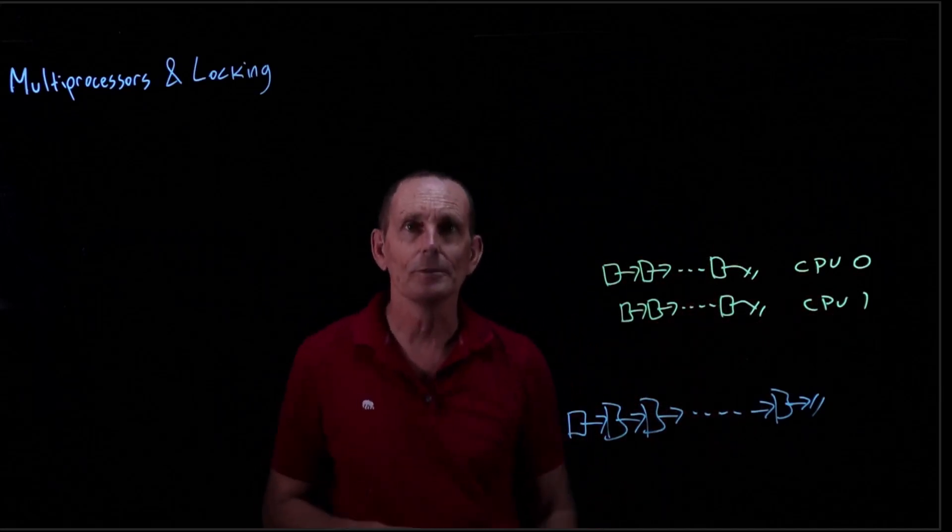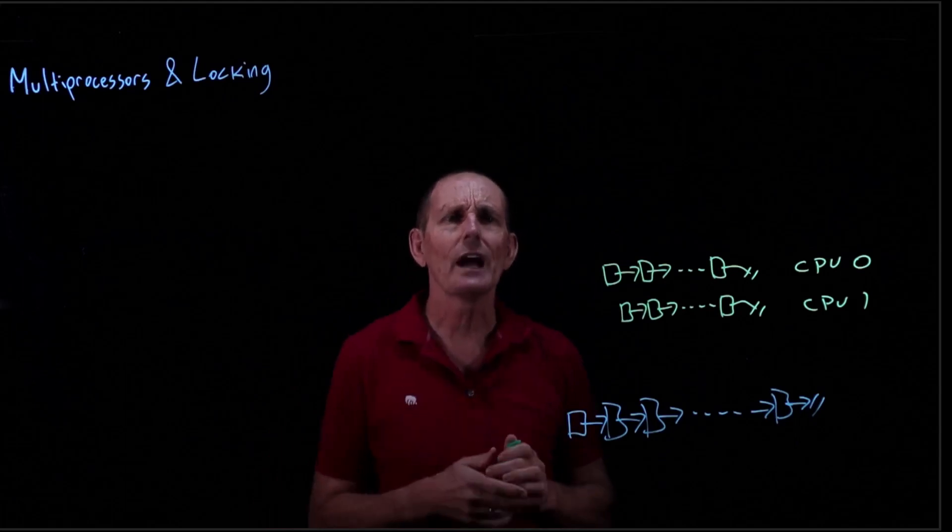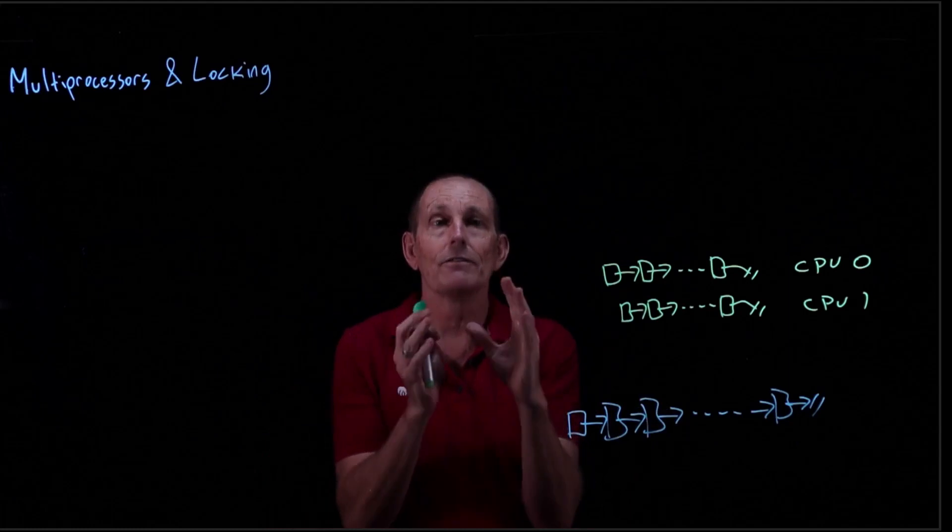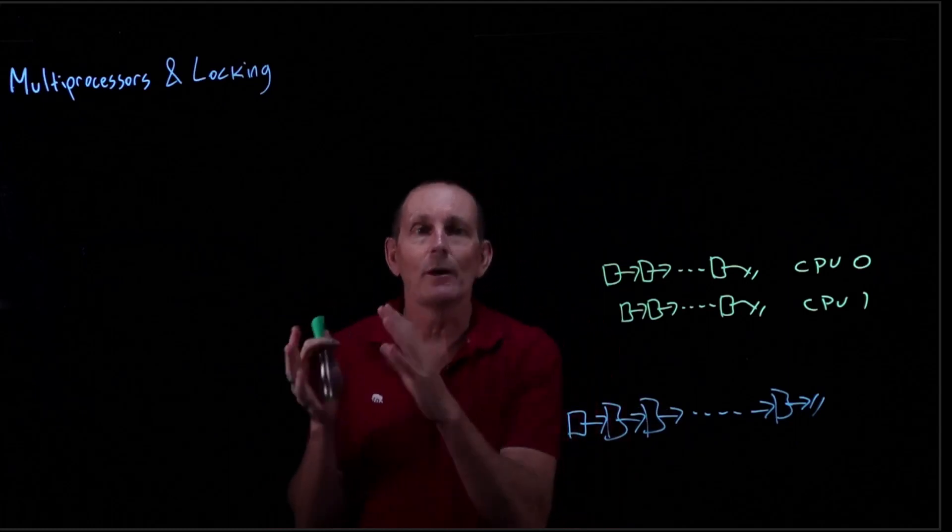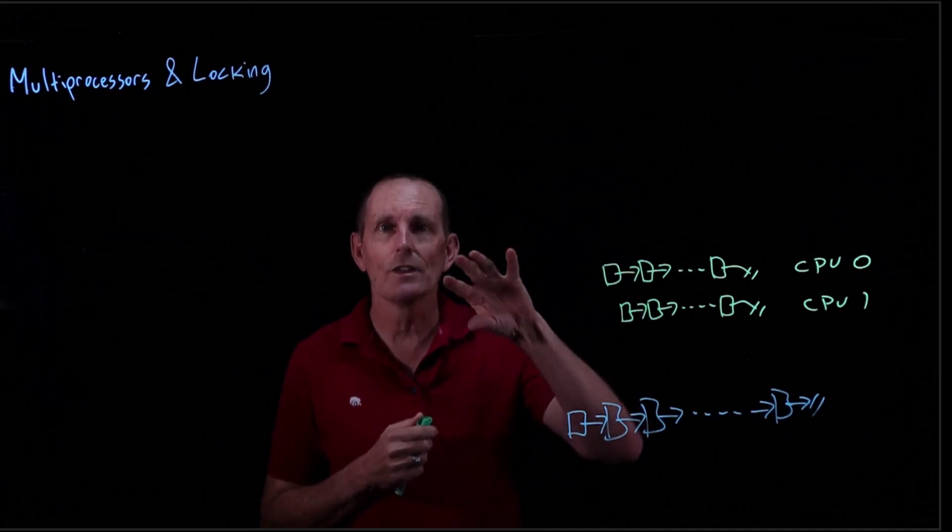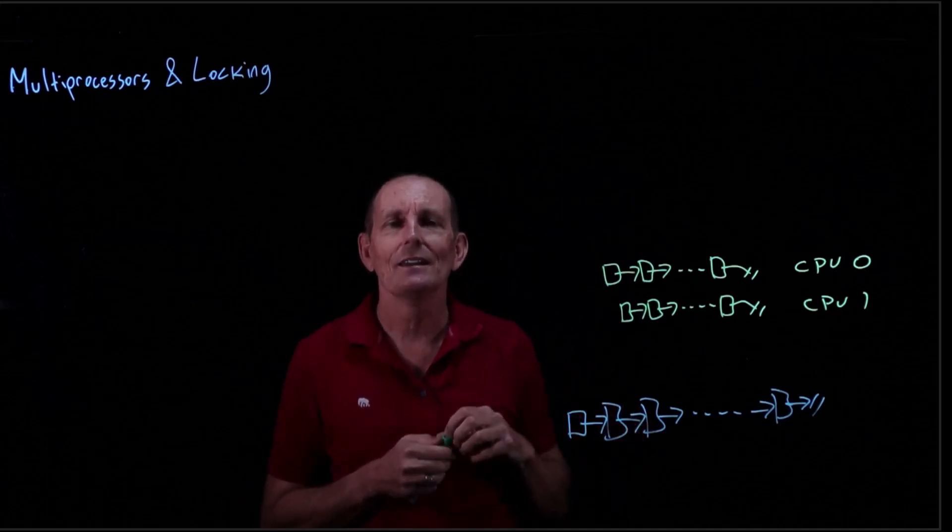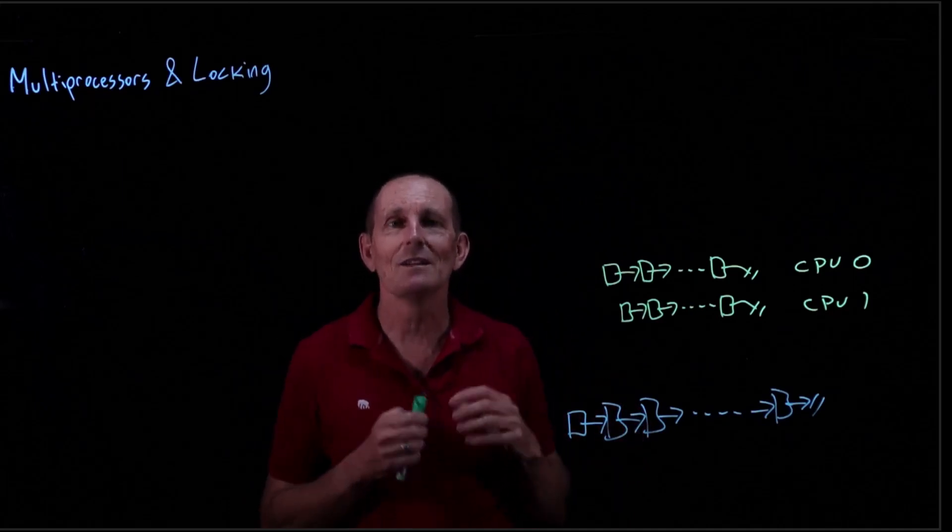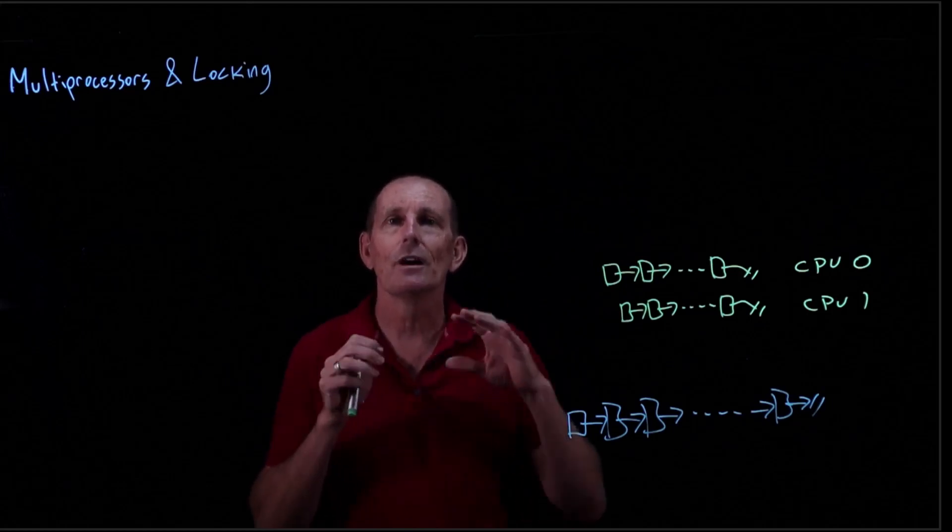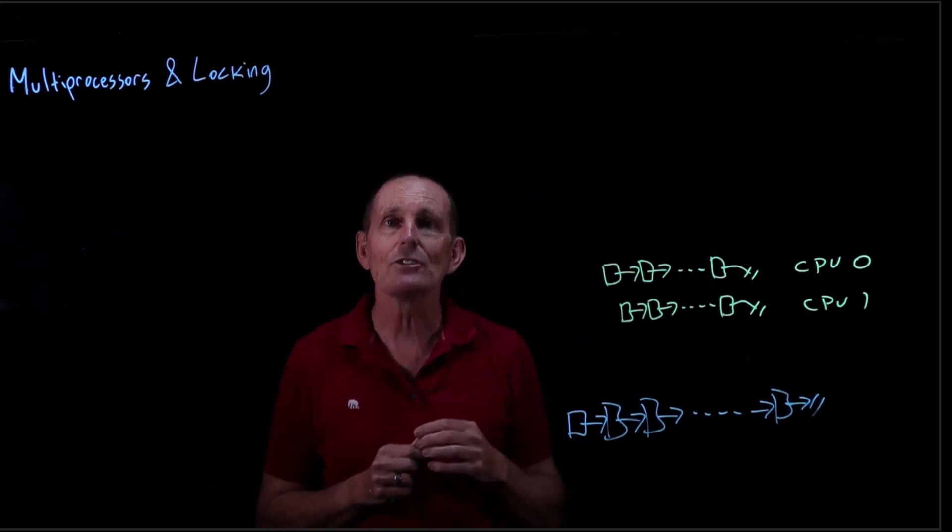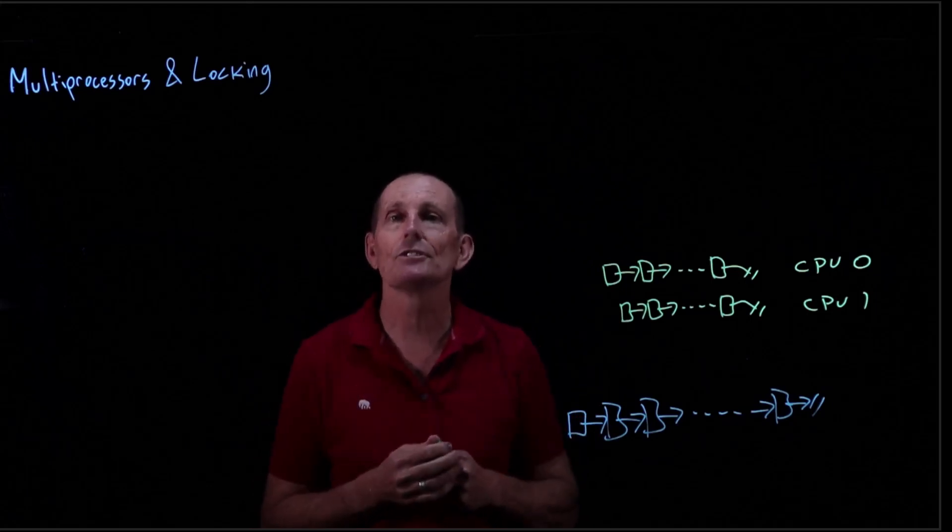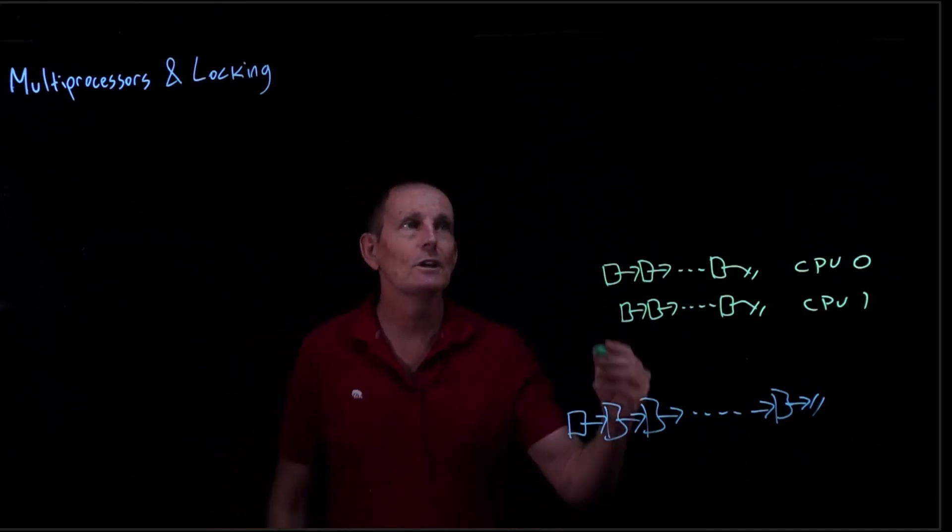Another possibility you can do is start out with locks per module. So you might have the file system, you might have networking and so on. To begin with, create locks for those. It's easier to reason about what's going on, reasoning about deadlock, reasoning about invariants, if you have these coarse-grained locks. Then measure, figure out whether there's a problem. Maybe that's just fine for certain modules. And then redesign only if you have to.